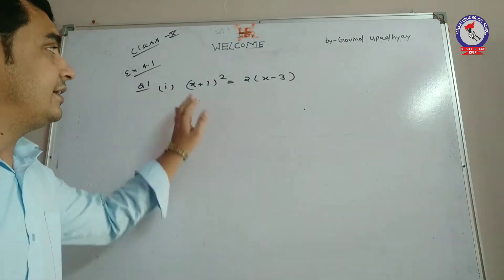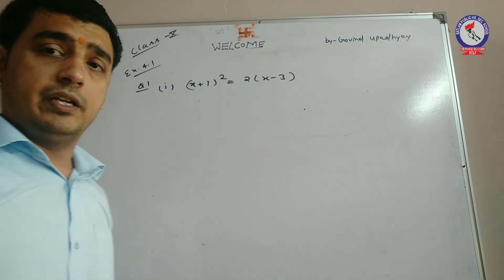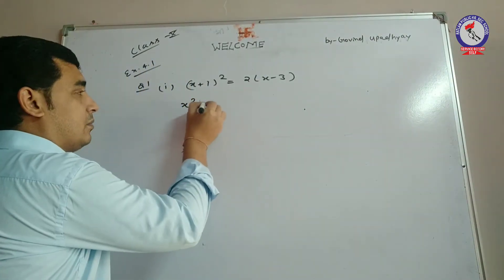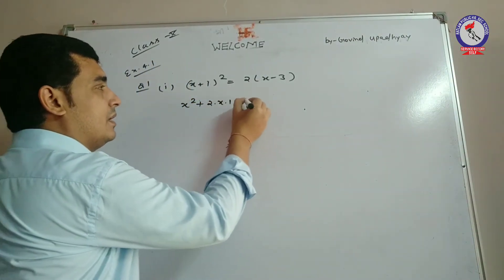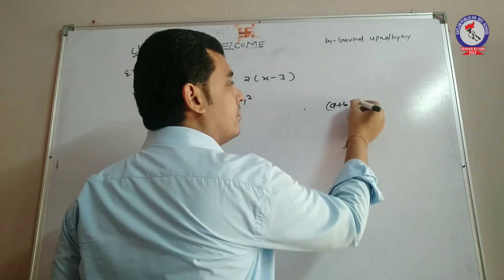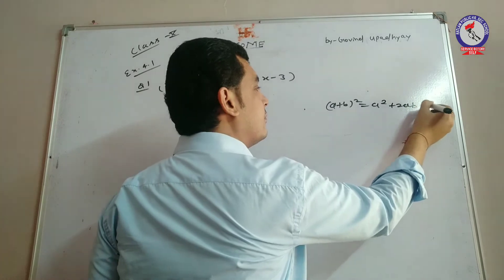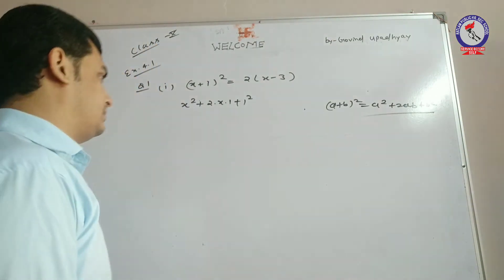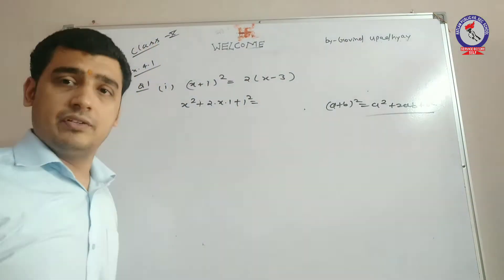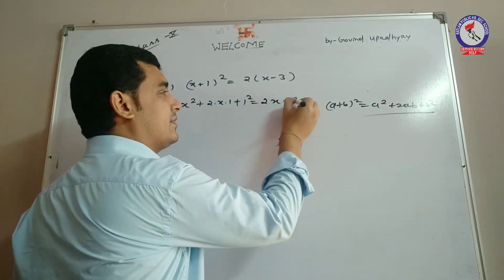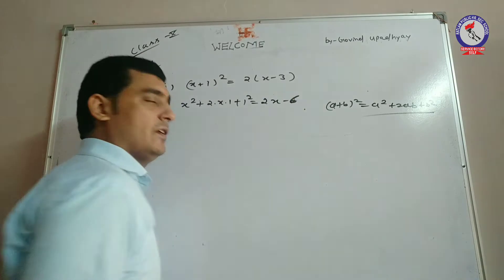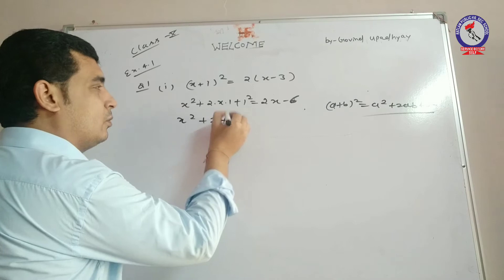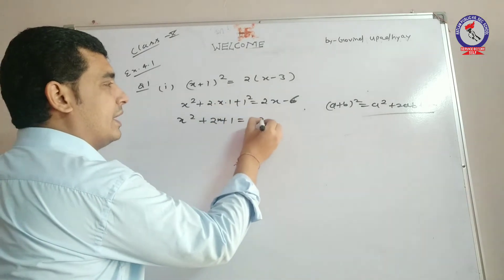Expand करते हैं — यहां identity apply होगी: a plus b whole square. a plus b whole square is a² + 2ab + b². So we get x² + 2x + 1 is equal to 2x minus 6 (we multiplied inside: 2 into 3 is 6).